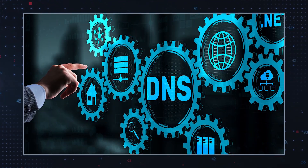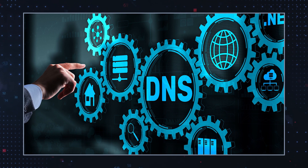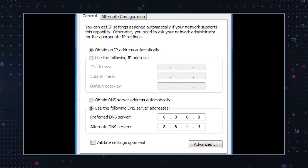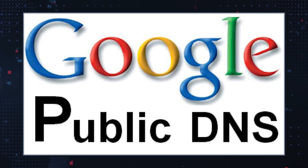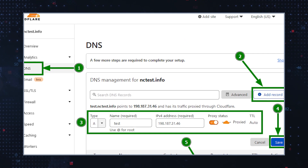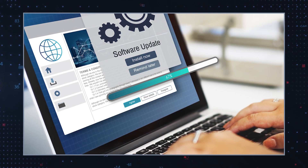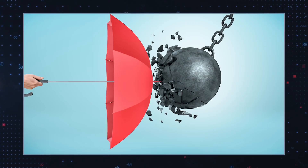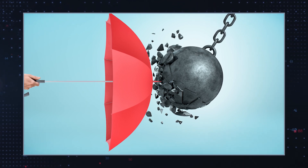Check DNS settings. Browser hijackers sometimes modify the domain name system settings to control your internet traffic. Ensure that your DNS settings are properly configured, or consider using a trusted DNS service such as Google Public DNS or Cloudflare DNS. Additionally, keep your operating system, web browsers, and installed applications up to date with the latest security patches to protect against known vulnerabilities.